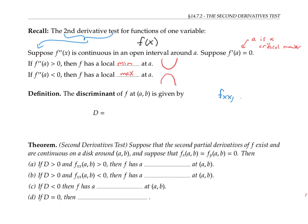We have f sub x,x; f sub y,y; f sub x,y; and f sub y,x. We'll need to refer to an expression involving all of these second derivatives called the discriminant. The discriminant at a point (a,b) is given by the determinant of the matrix with entries f sub x,x; f sub x,y; f sub y,x; f sub y,y — all evaluated at the point (a,b).